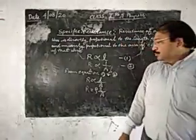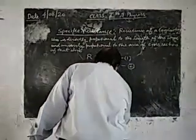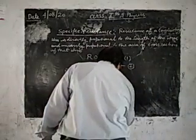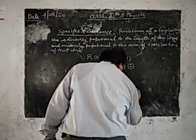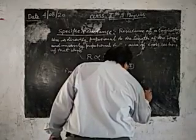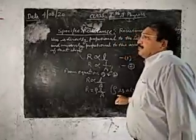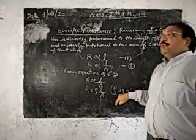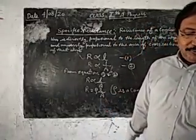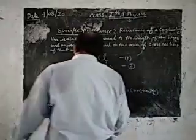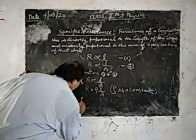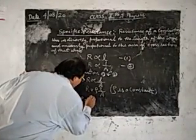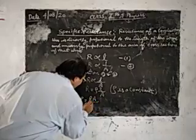So what is rho? Here rho is a constant, and that constant is known as the specific resistance. So you can write rho by transposition as R A upon L.